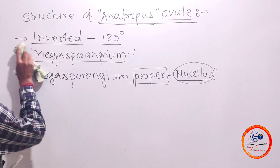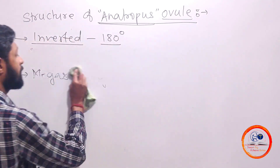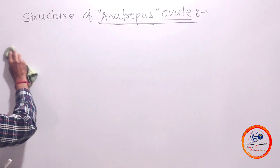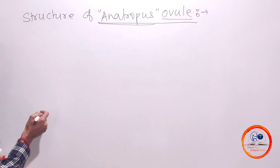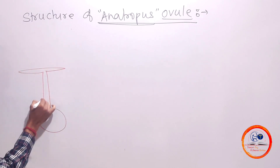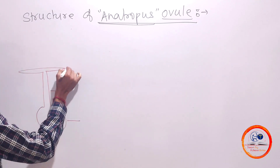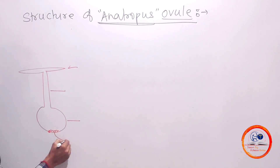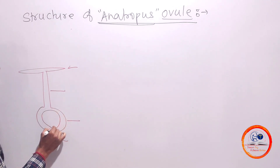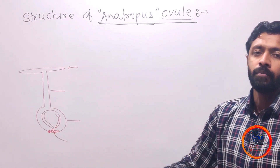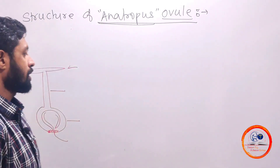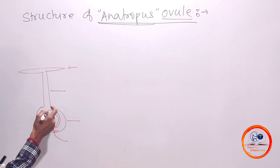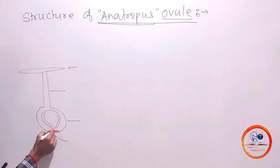Now we'll see the female reproductive part, that is the gynoecium. In the gynoecium we observe there is a presence of ovary, style, and stigma. Inside this ovary there is a presence of a nutritive tissue which we call placenta, and on that placenta there will be arrangement of ovules. Ovules are arranged according to the placenta, which we have seen in morphology. There are different types of placentation observed in the morphology of flowering plants.